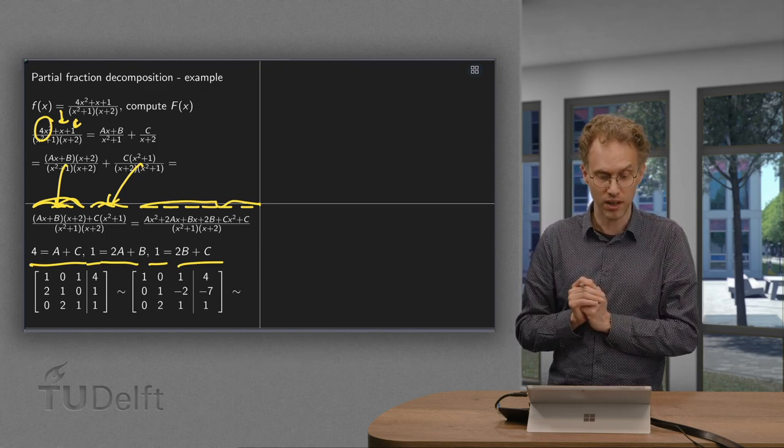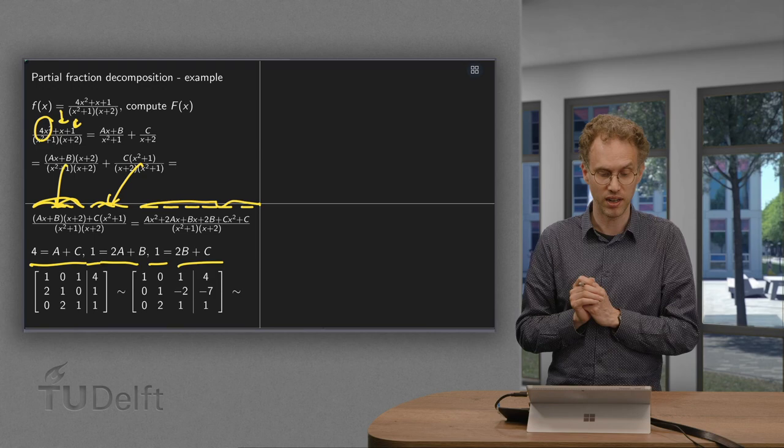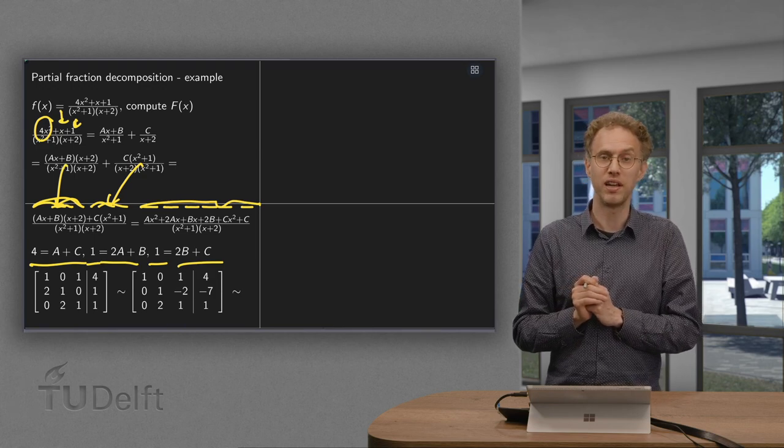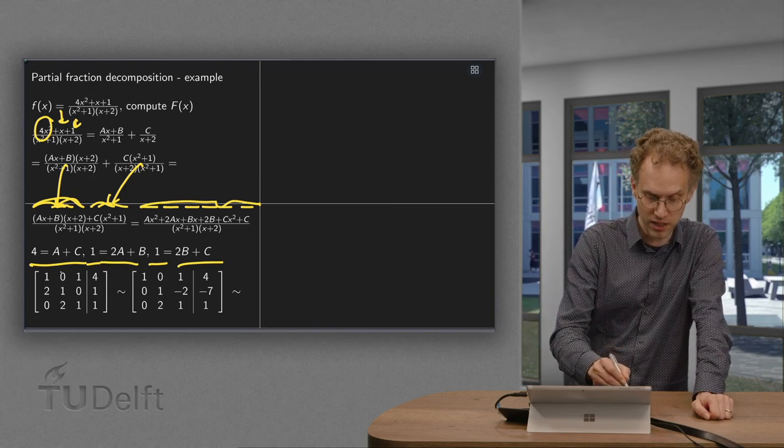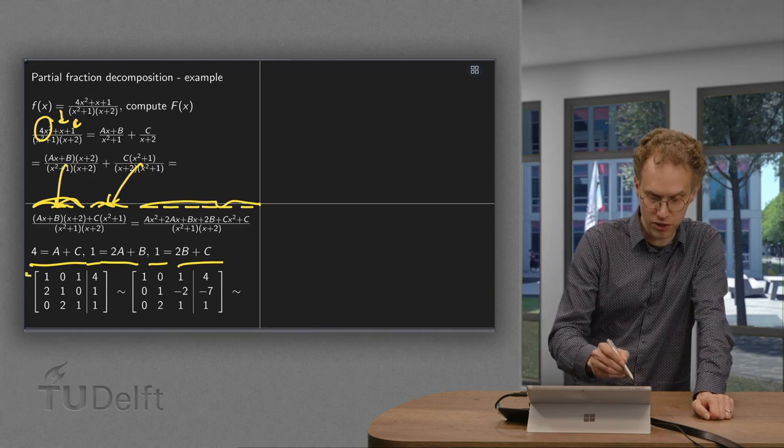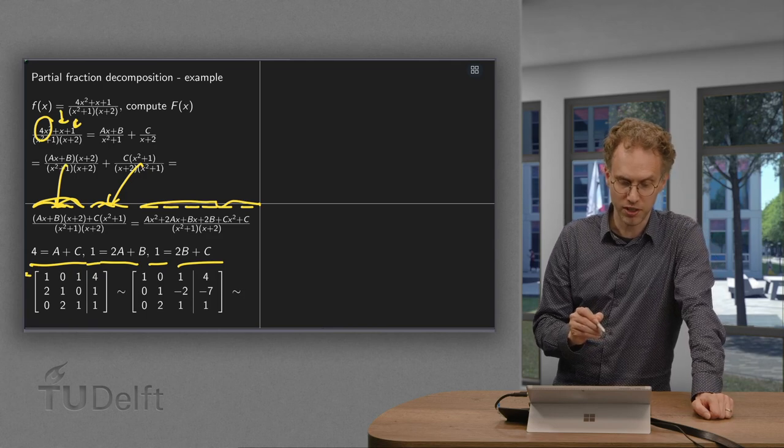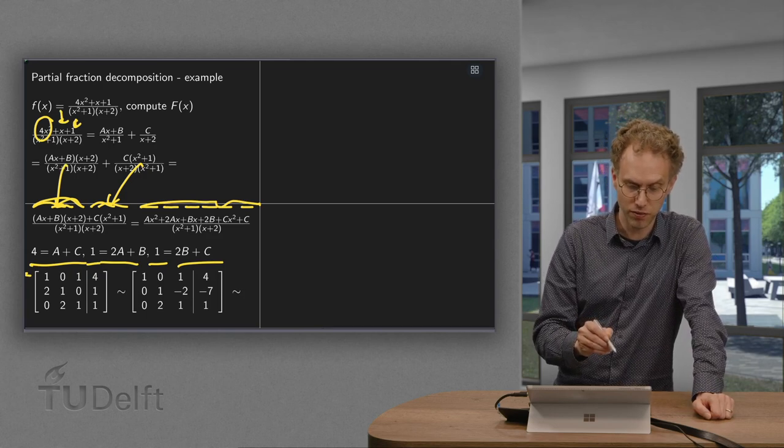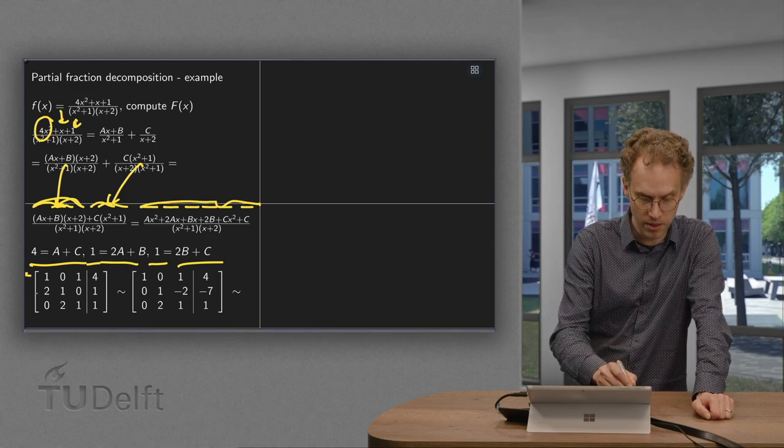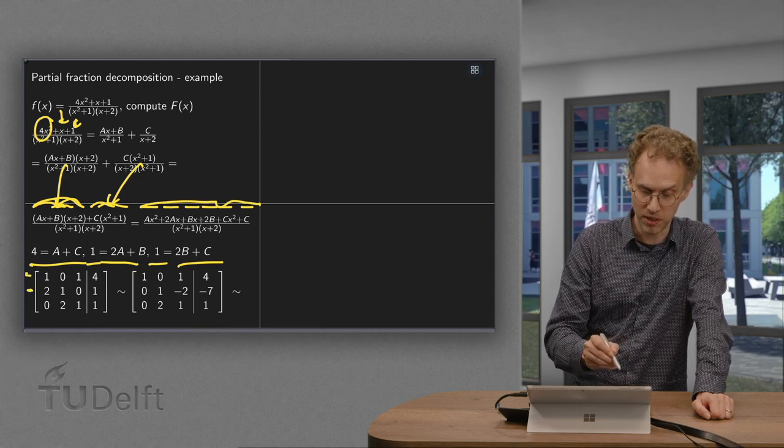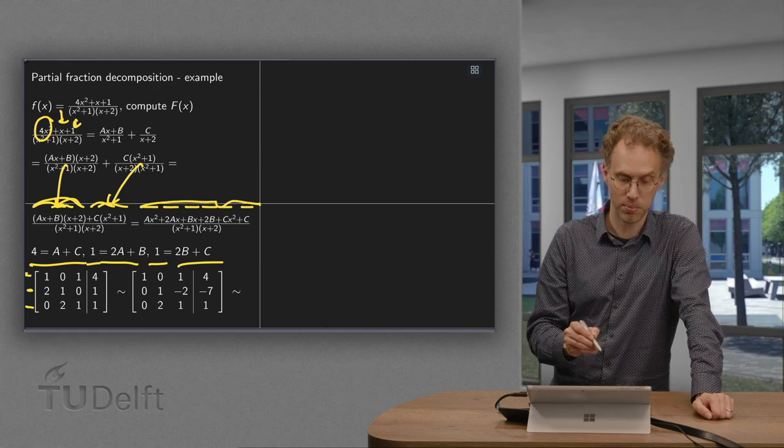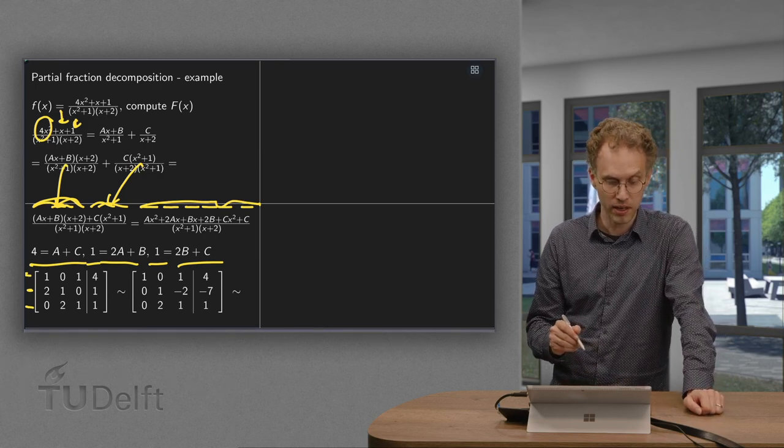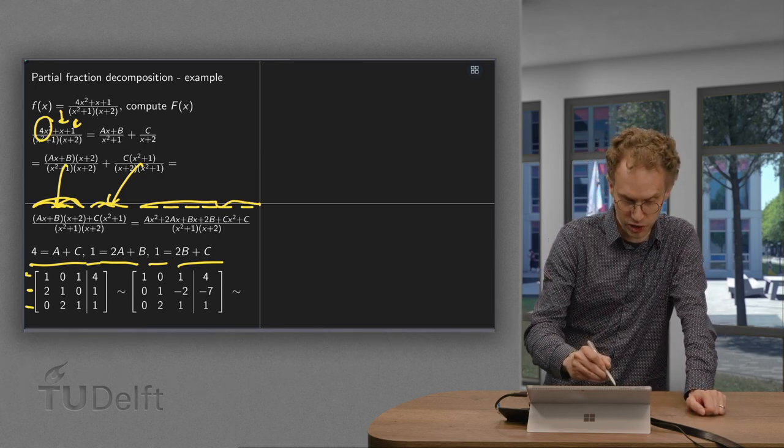With three unknowns and three equations. So we can use our linear algebra to solve these equations. We form the augmented matrix. First row, 1 times a plus 0 times b plus 1 times c equals 4. Second row, 2 times a plus 1 times b equals 1. And third row, 0 times a plus 2 times b plus 1 times c equals 1. Then we use the row reduction.